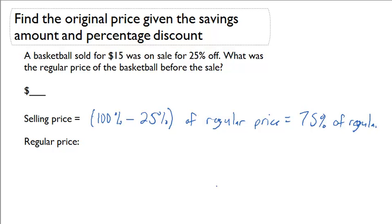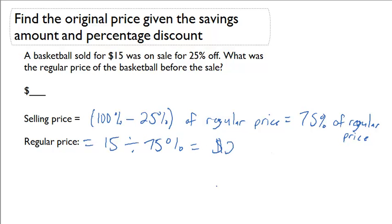This will now allow us to calculate what the regular price was. We can simply do regular price equals 15 divided by 75%, and that will give us a regular price of $20.